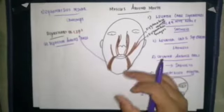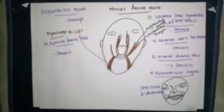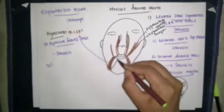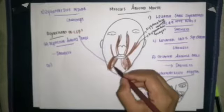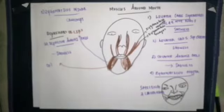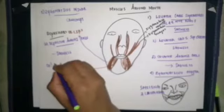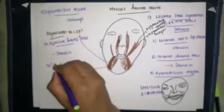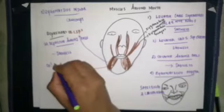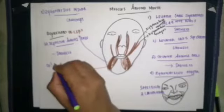When the depressor anguli oris contracts, it draws the angle of the mouth downwards, which creates an expression of sadness. Additionally, depressor labii inferioris is inserted into the lower lip and helps in depression of the lower lip.